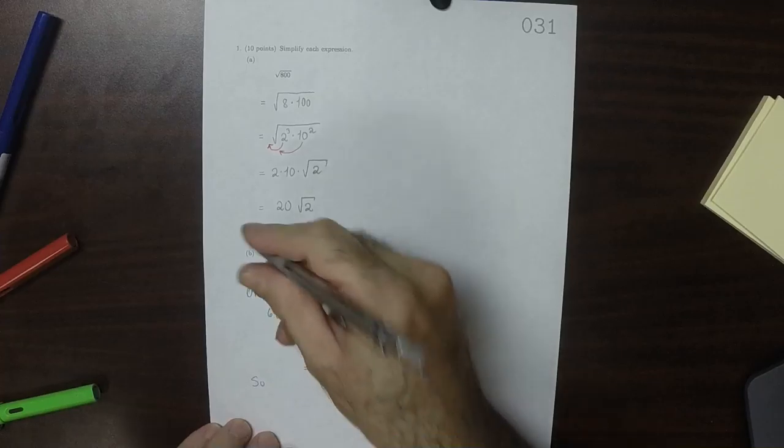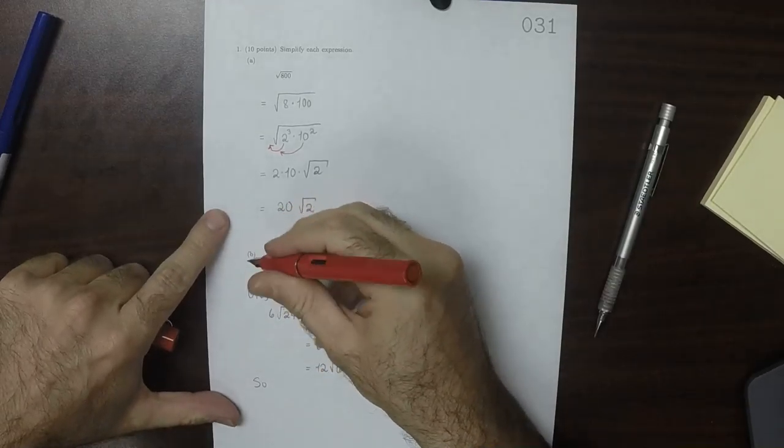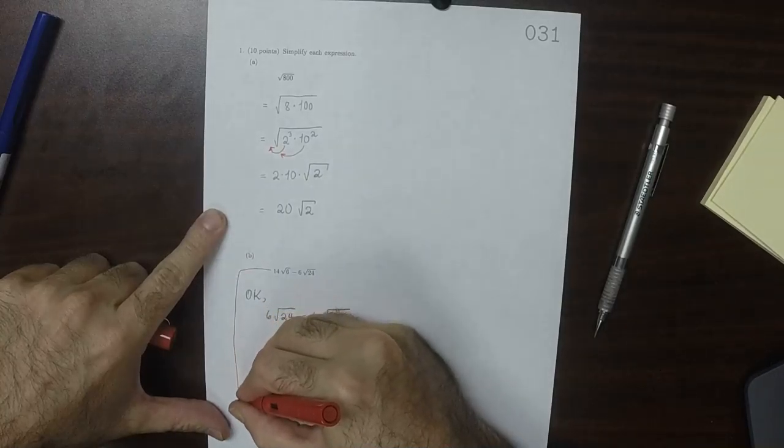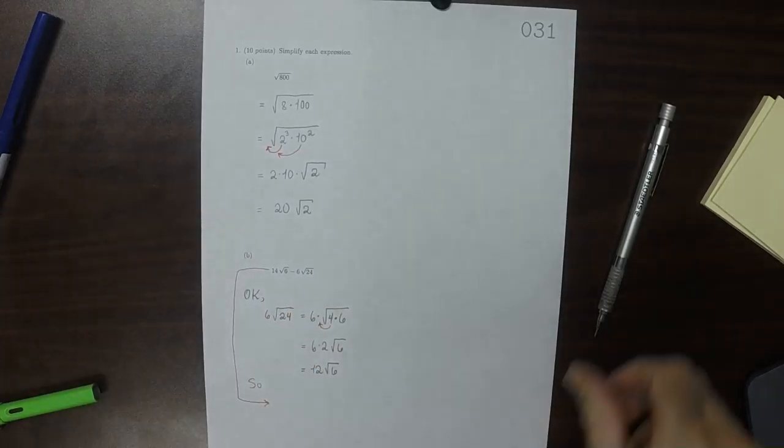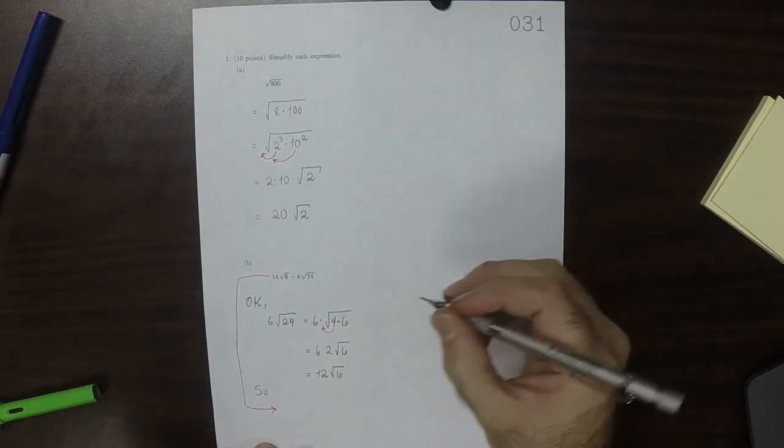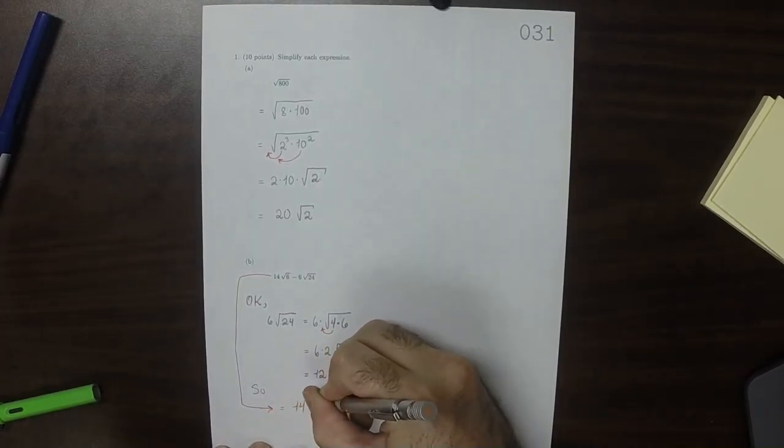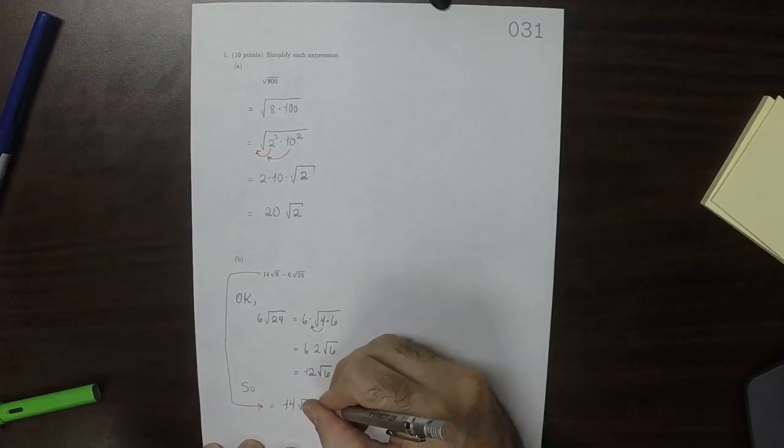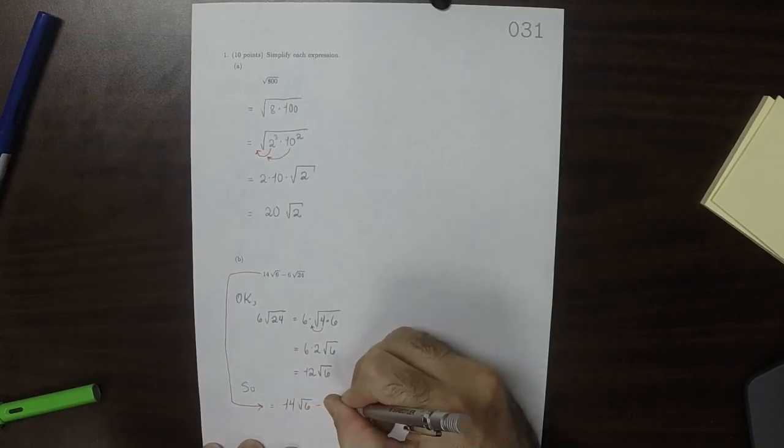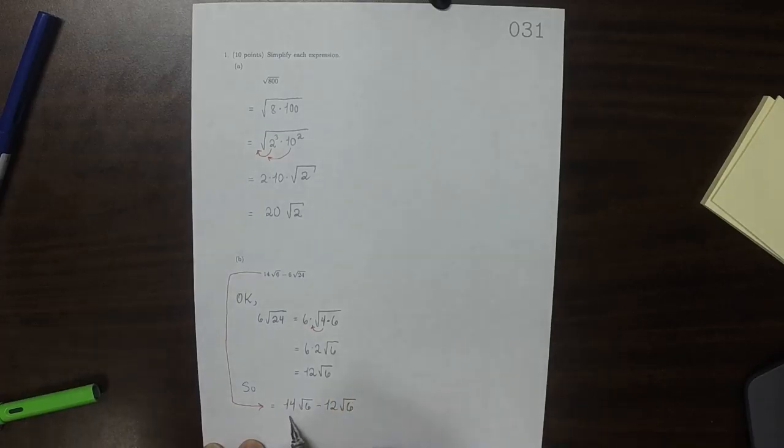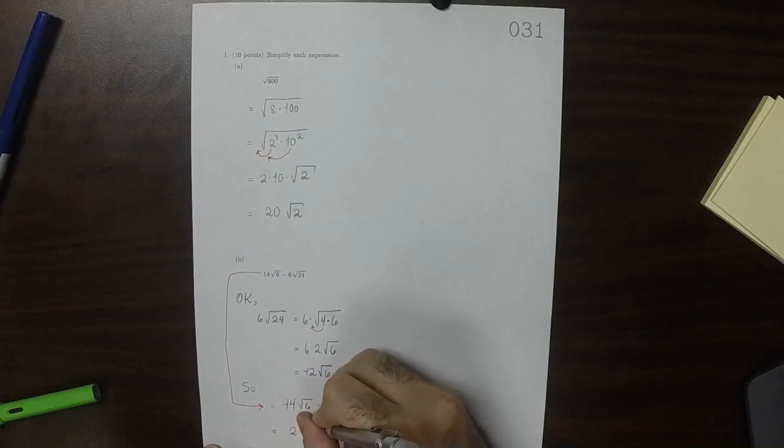So we can continue this and say that that is equal to 14 square root 6, and then minus 12 square root 6. So 14 of them minus 12 of them is 2 of them. So 2 square root 6.